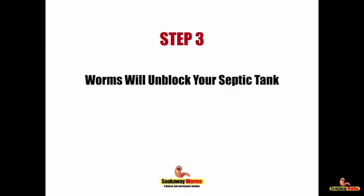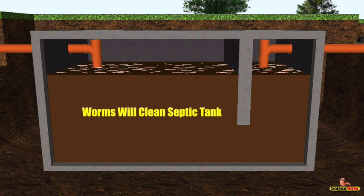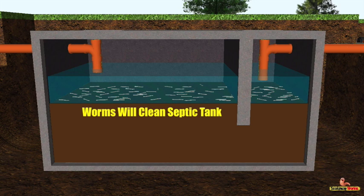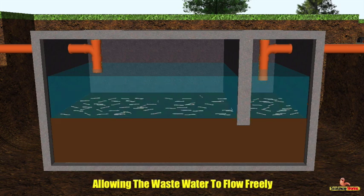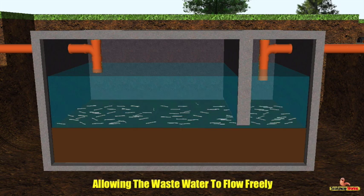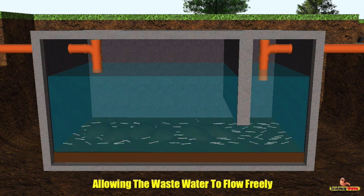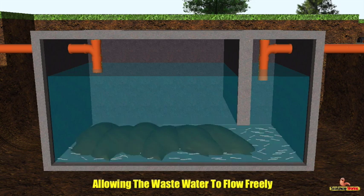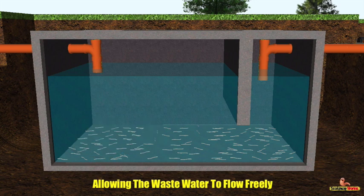Soak away worms will also clean and unblock your septic tank. Whilst the worms unblock your soak away, they will also be burrowing and eating and cleaning out your septic tank, eating that sludge, fat and grease. Not only will they unblock and clean your entire septic tank and soak away system, they'll also keep them unblocked and prevent them from becoming clogged and blocked again. That in turn will allow the wastewater to make its way freely from the house, to the tank, to the soak away and naturally into the soil.